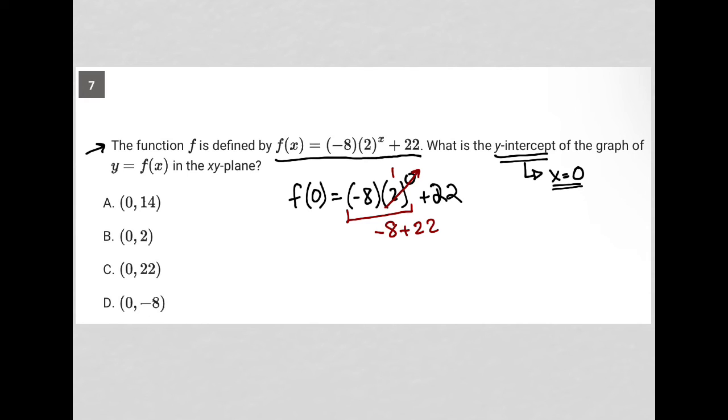So I have f of 0 equals 14, which means when x is 0, y is 14, which means my y-intercept is at that point, which tells me that choice A is the correct answer.